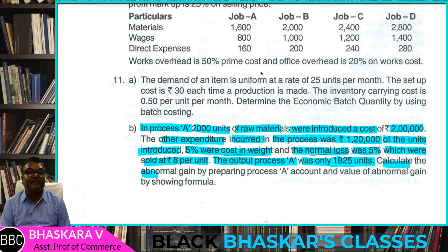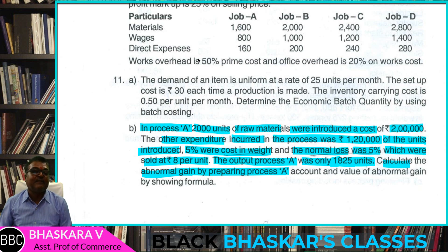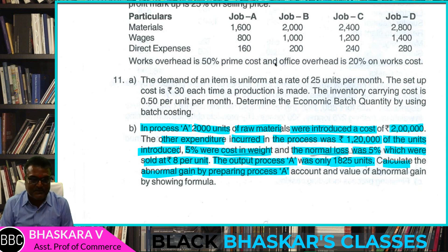The output of Process A was only 1,825 units. Calculate the amount of abnormal gain and prepare the Process A account.